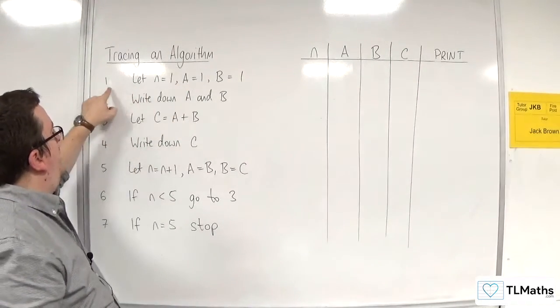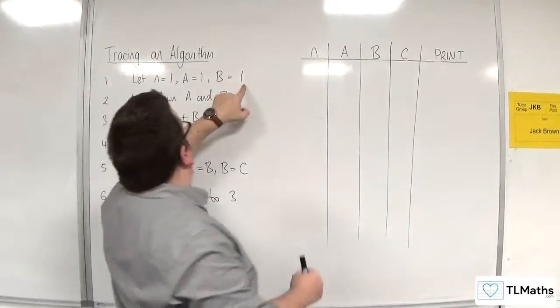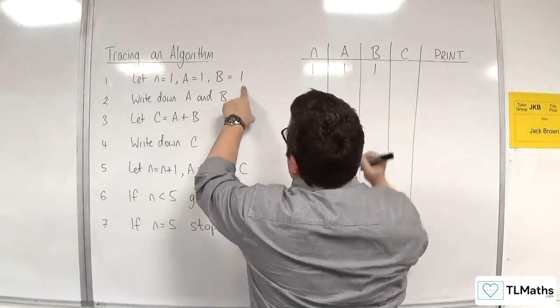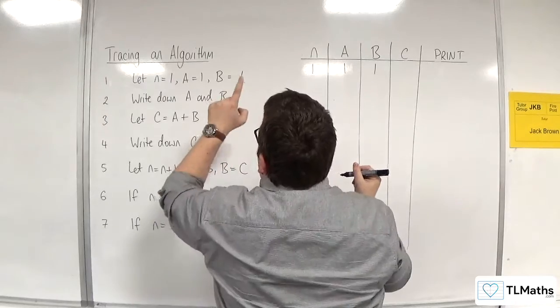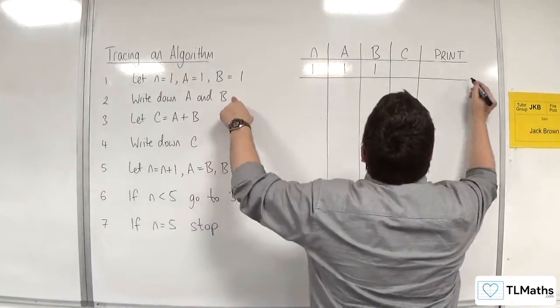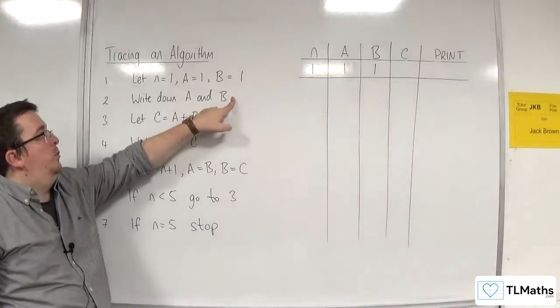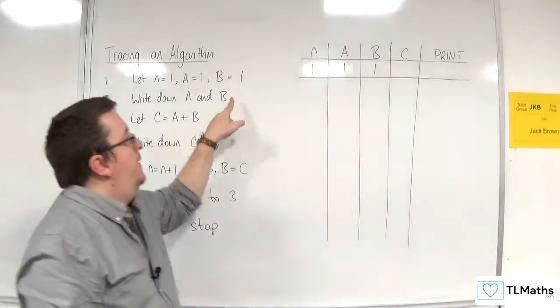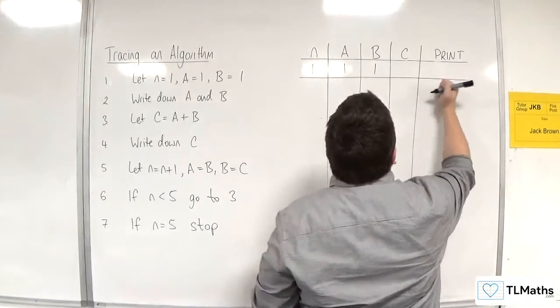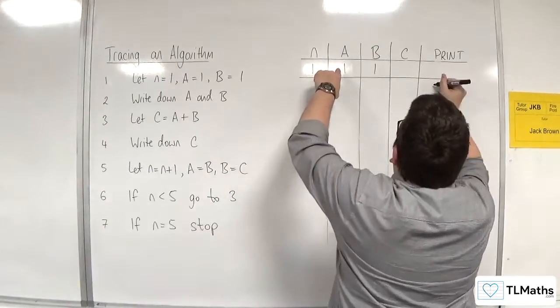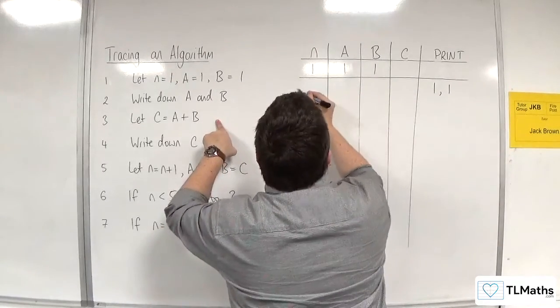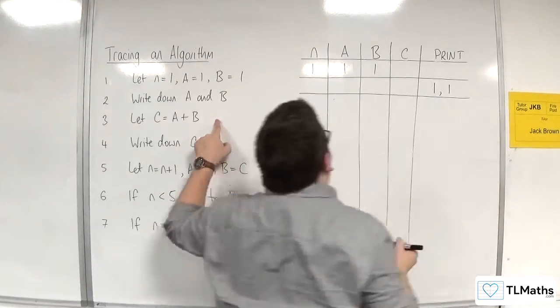So, at the start, step one, let N is equal to one, A equals one, and B equals one. Now because we're going to the next step, we should go to the next line in our trace table. Write down A and B. So, we are writing down A and B. A is one, and B is one. So we're going to the next line, so we should draw a line underneath that.